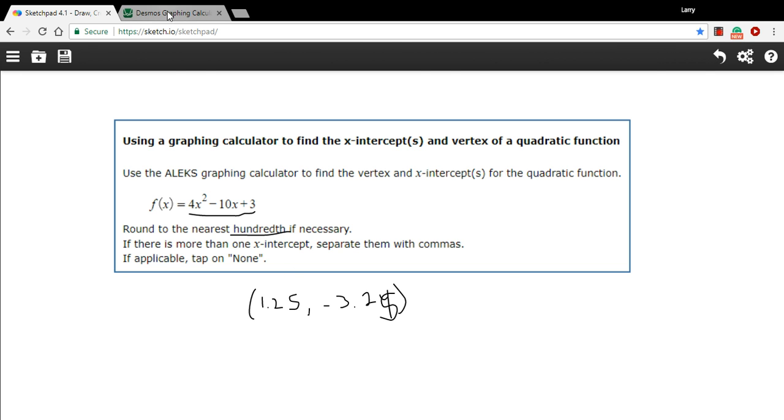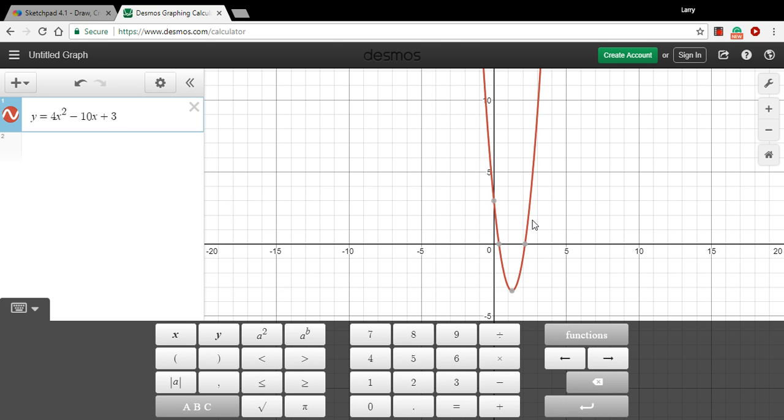Now we want the x-intercepts. That is where this graph crosses the x-axis. And we really only need this value of x because y is going to be 0. So we have 0.349,